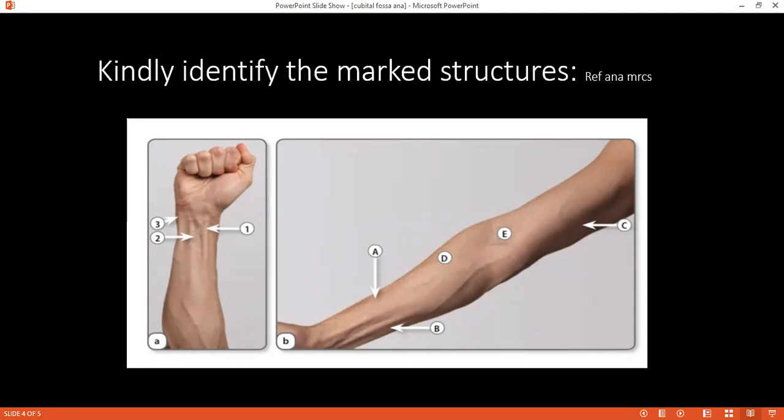What are the muscles which are responsible for these movements? Flexion is caused by biceps, brachialis, brachioradialis, pronator teres and flexor carpi radialis. Extension is caused by triceps. Pronation is caused by pronator teres and supination is caused by supinator and biceps. Okay.